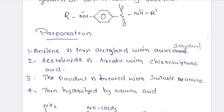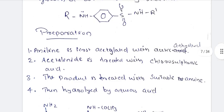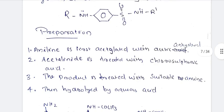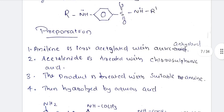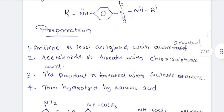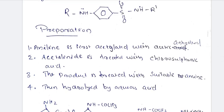Acetic anhydride treatment forms the intermediate G-U-R-NH-CO-CH3. That is why we then treat with chlorosulfonic acid. We treat SO2Cl in there. If we replace the Cl in there, we treat SO2Cl and carry out substitution.